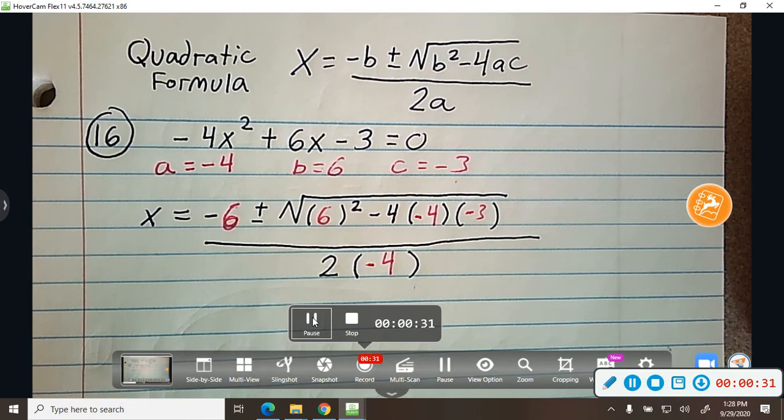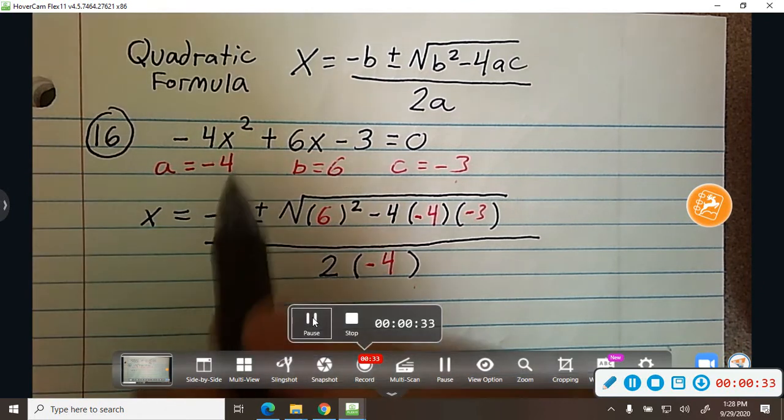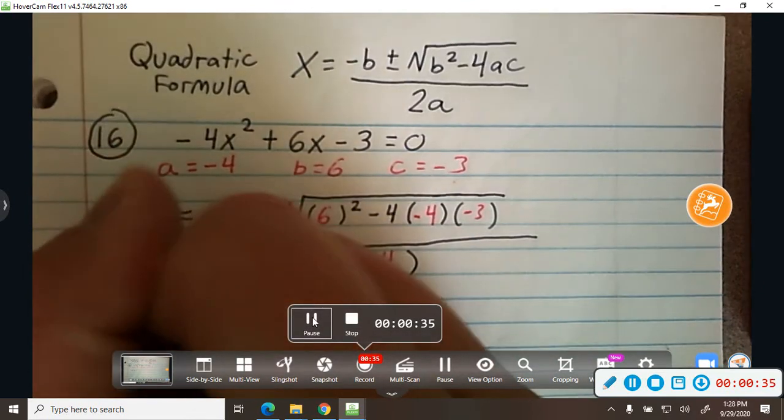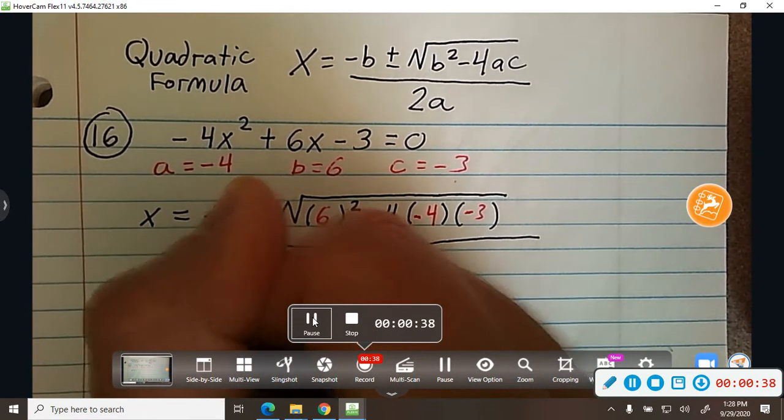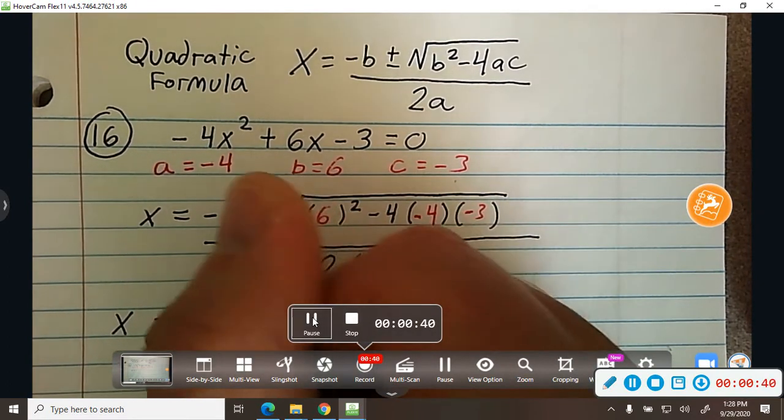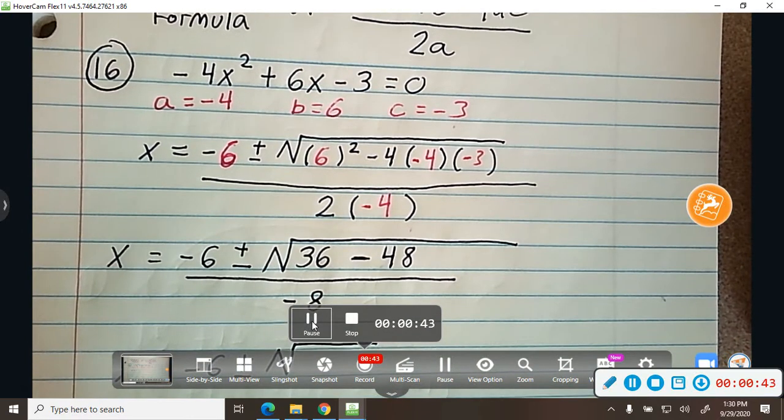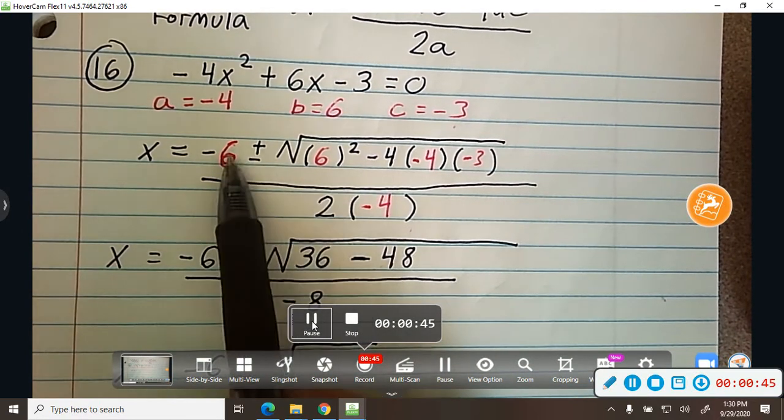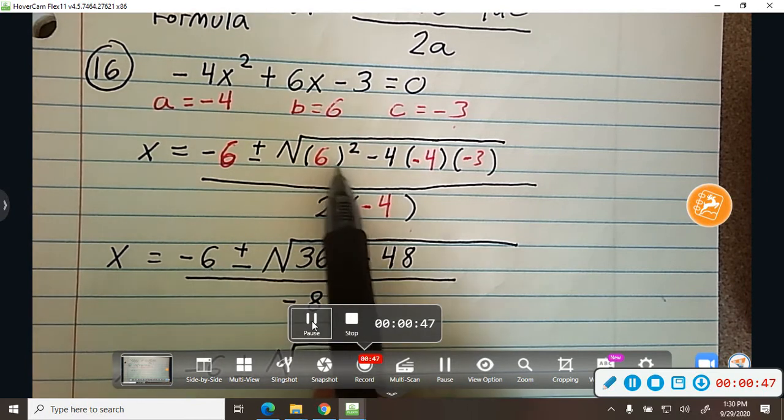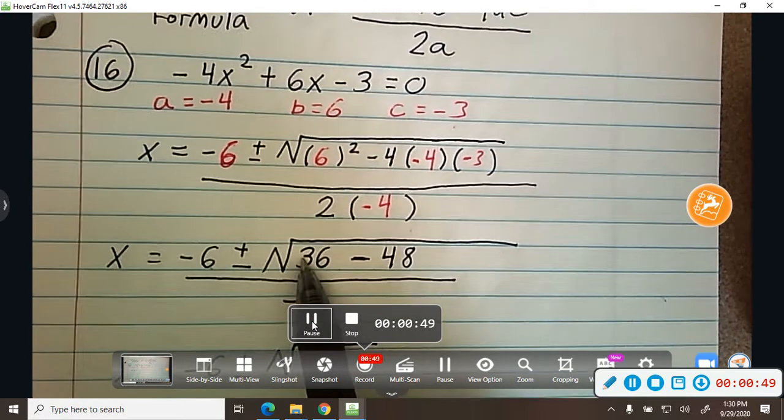So first, I have negative 6. So I did the math here. I brought down the negative 6. I said 6 squared is 36.